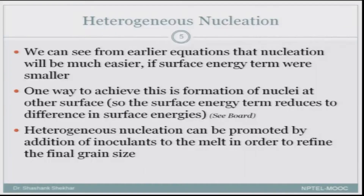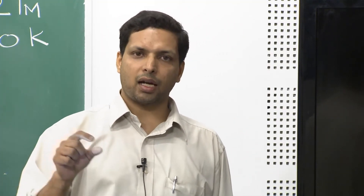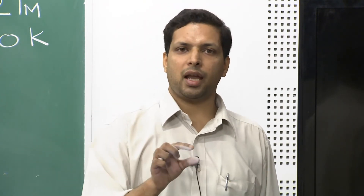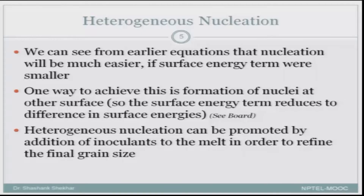Heterogeneous nucleation can be achieved by changing the γ_SL term — the surface energy term. What nature does is form a surface at a place where a surface already existed. Therefore, you are looking only at the difference in surface energy.